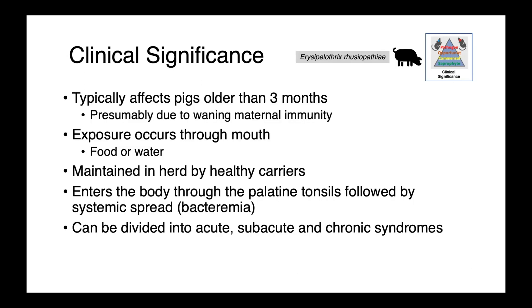In pigs, we typically see Erysipelothrix infections in animals older than three months. We think this is due to waning maternal immunity — those antibodies that the piglets get from their mother persist for a period of time, and when they start to decline, that's when we see increasing susceptibility. Exposure occurs orally, so typically through food or water, and it's maintained in the herd through healthy carriers.